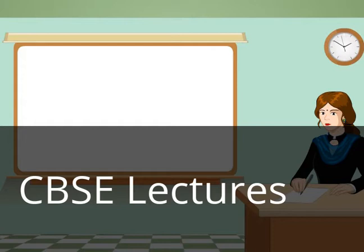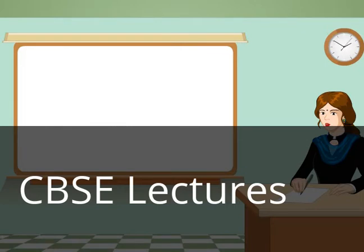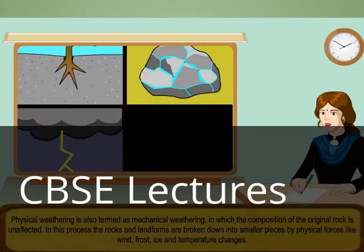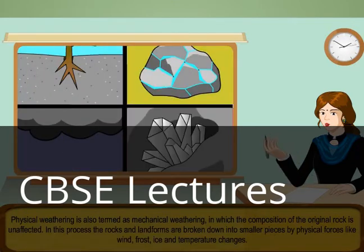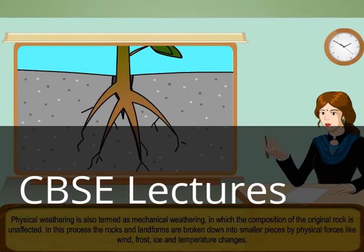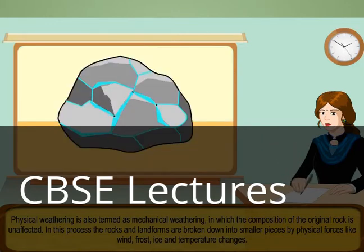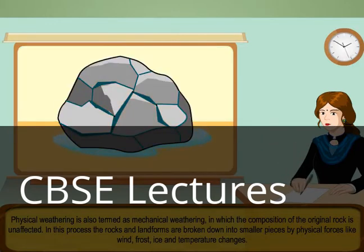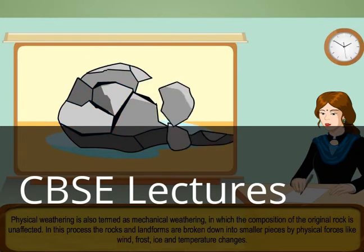Weathering is of two types: physical weathering and chemical weathering. Physical weathering is also termed as mechanical weathering, in which the composition of the original rock is unaffected. In this process the rocks and landforms are broken down into smaller pieces by physical forces like wind, frost, ice, and temperature changes.